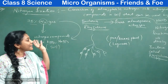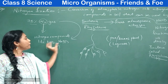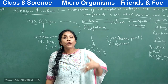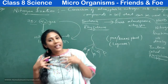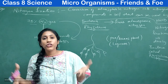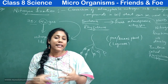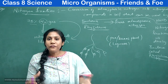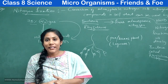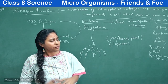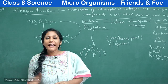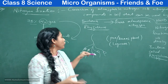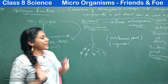Nitrogen enters a plant body in the form of these compounds, and we consume plants, so that way nitrogen enters into our body. Why is nitrogen very much necessary for the body? It is to prepare proteins — it is for the synthesis or manufacture of proteins. Our atmosphere has 78% nitrogen, and all that nitrogen is converted into these compounds by nitrogen-fixing bacteria.